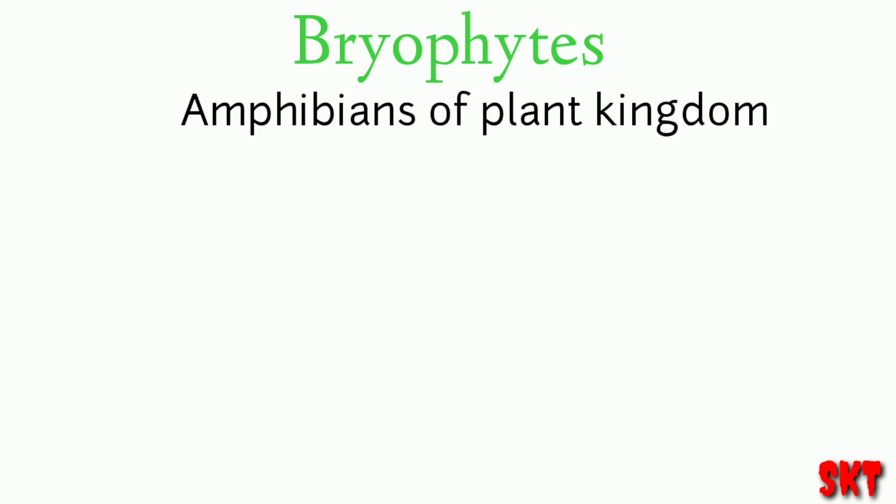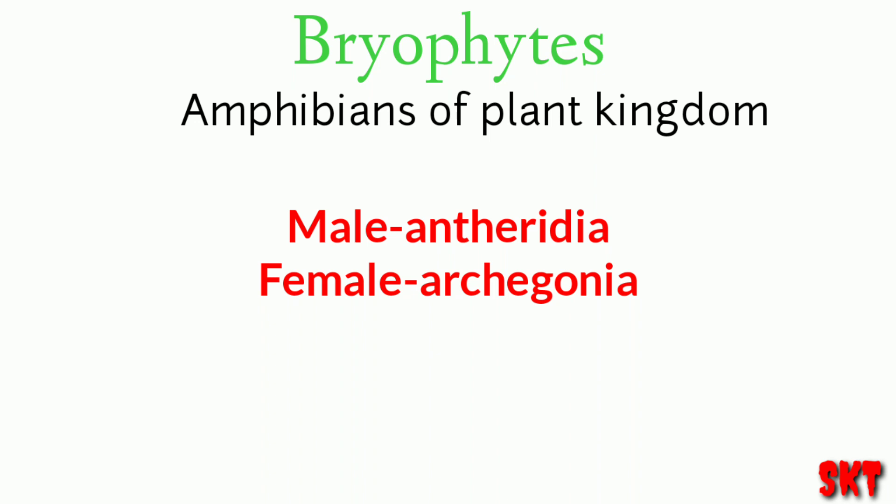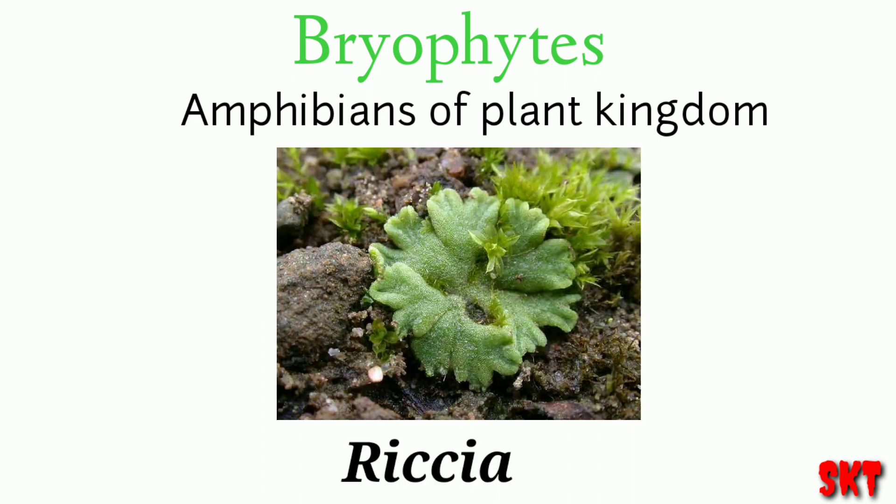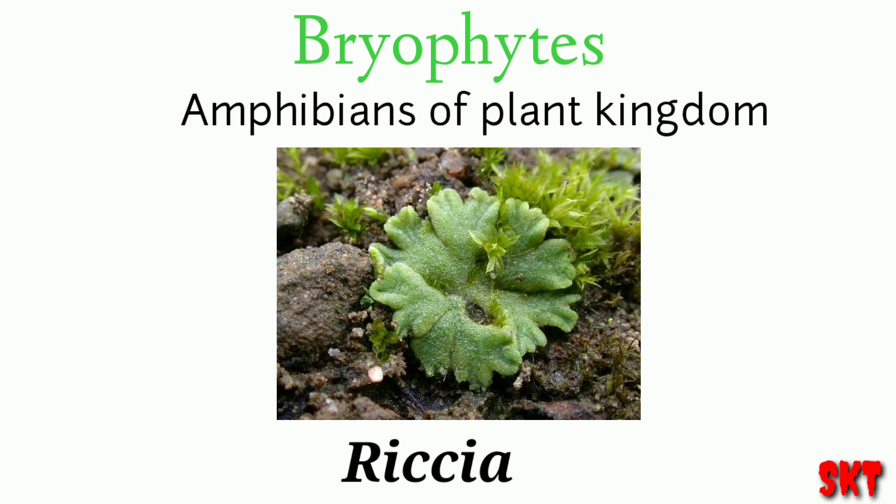The next one is bryophytes. These are also called the amphibians of the plant kingdom since they require both land and water for the completion of their life cycle. These plants possess rhizoids for attachment to their substratum. Bryophytes get their nutrition from dust, rainwater, and substances dissolved in water at the soil surface. The male sex organ is called antheridia and the female sex organ is called archegonia, and fertilization takes place in water. Common examples are mosses and Marchantia.